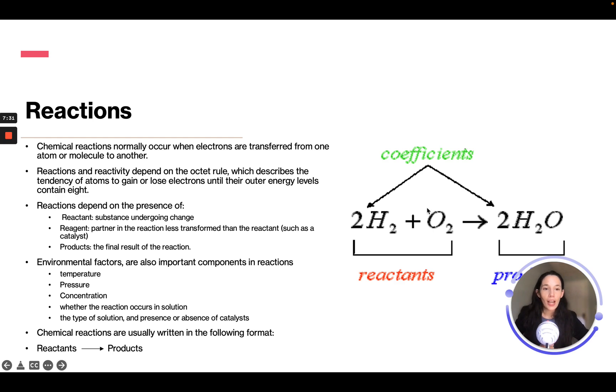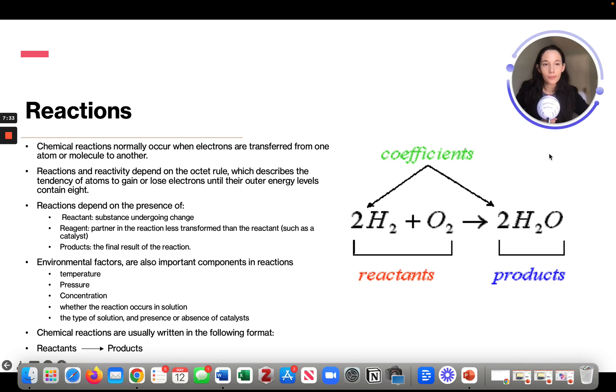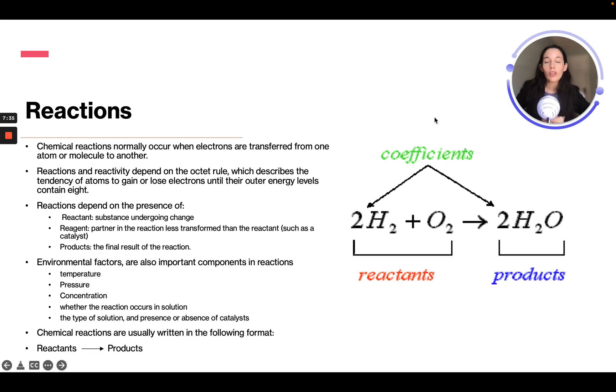Chemical reactions normally occur when electrons are transferred from one atom or molecule to another. Reactions and reactivity depend on the octet rule, which describes the tendency of atoms to gain or lose electrons until their outer energy levels contain eight. Reactions depend on the presence of a reactant, which is a substance that undergoes the change.